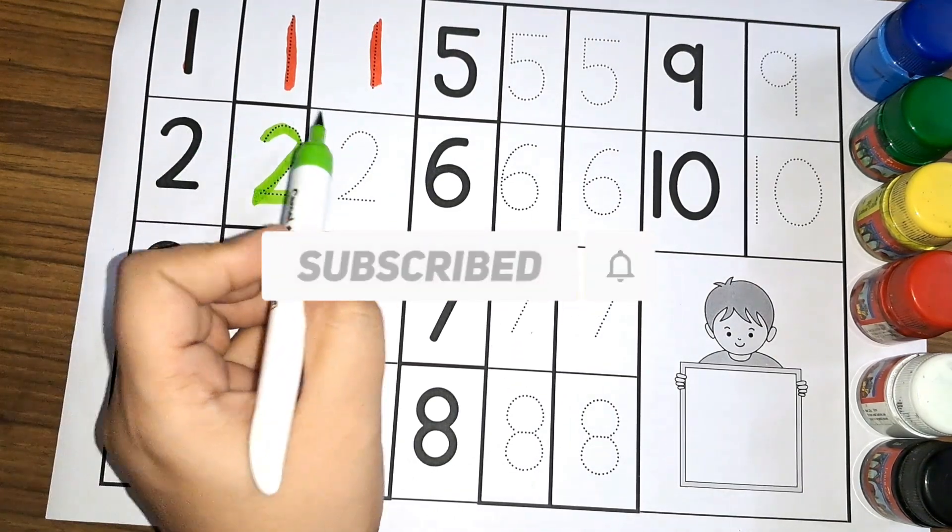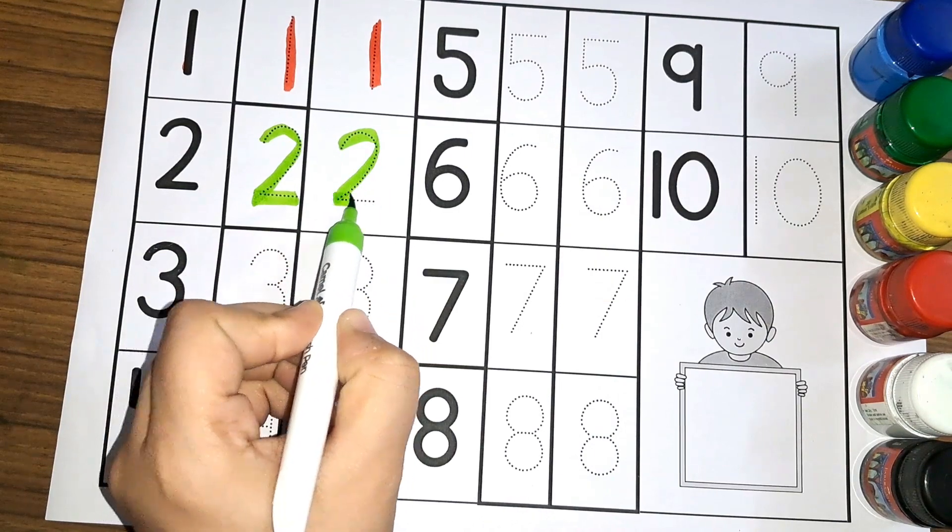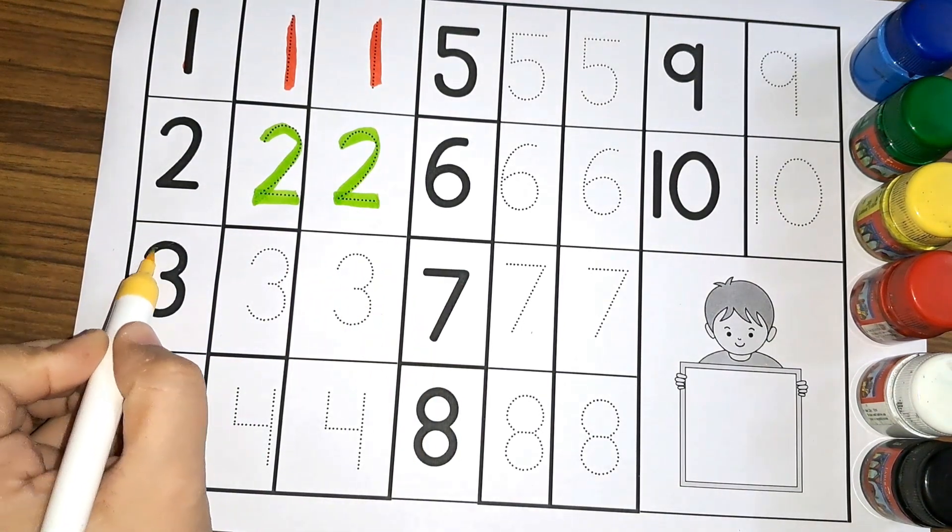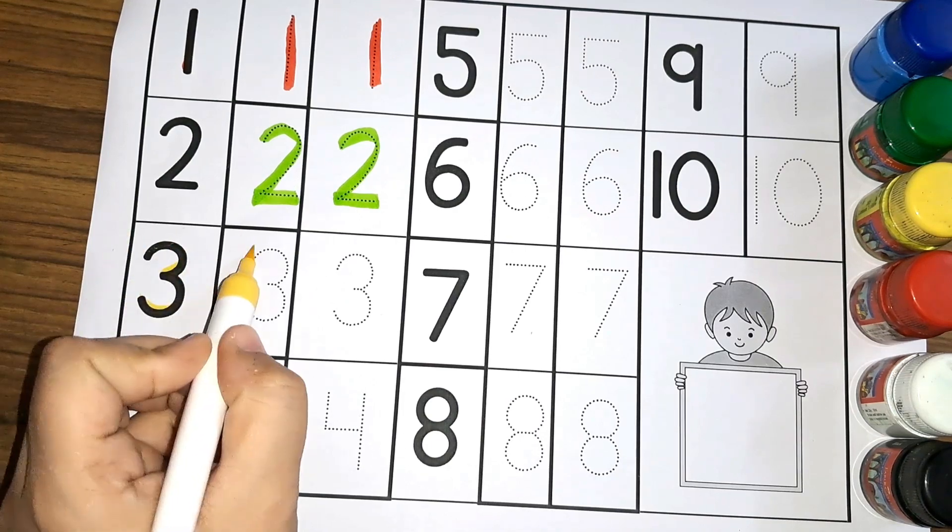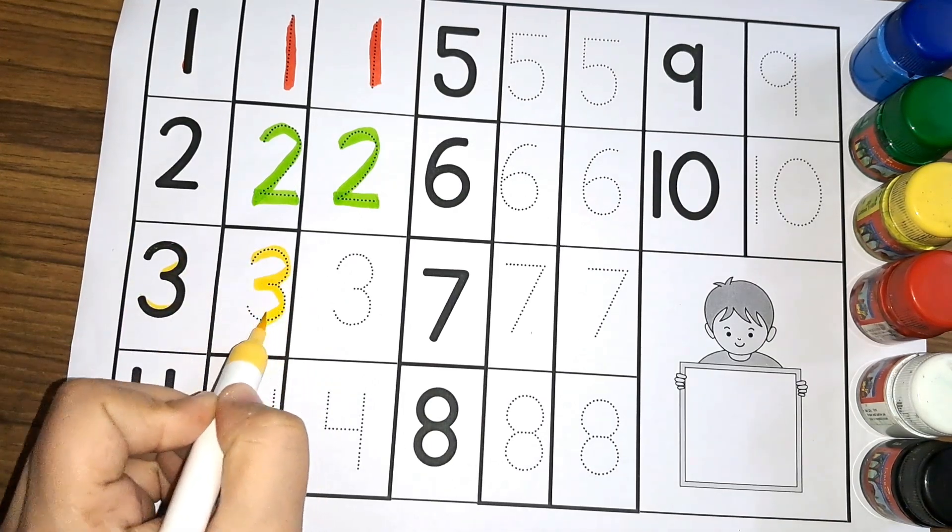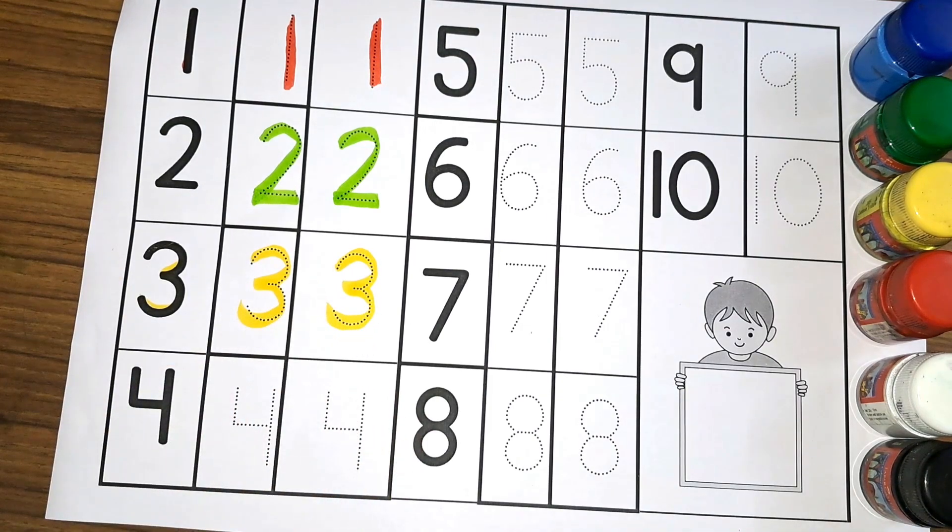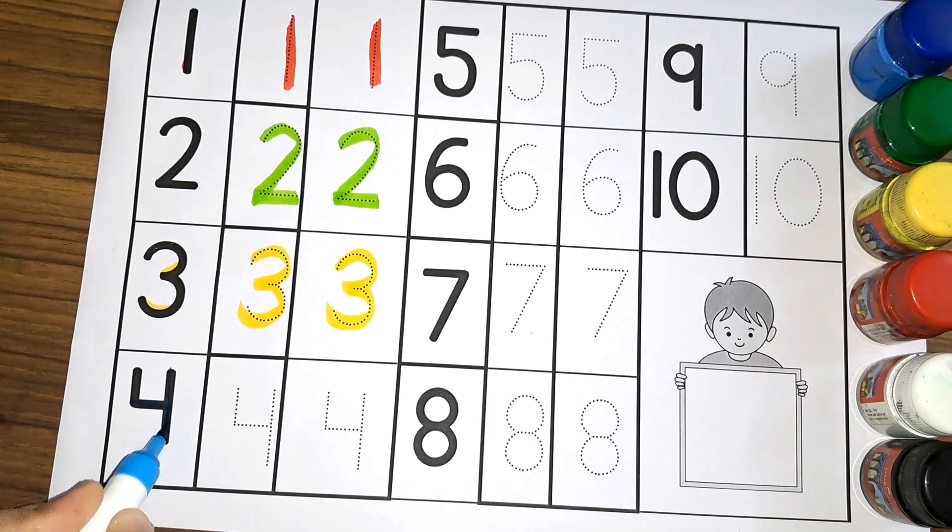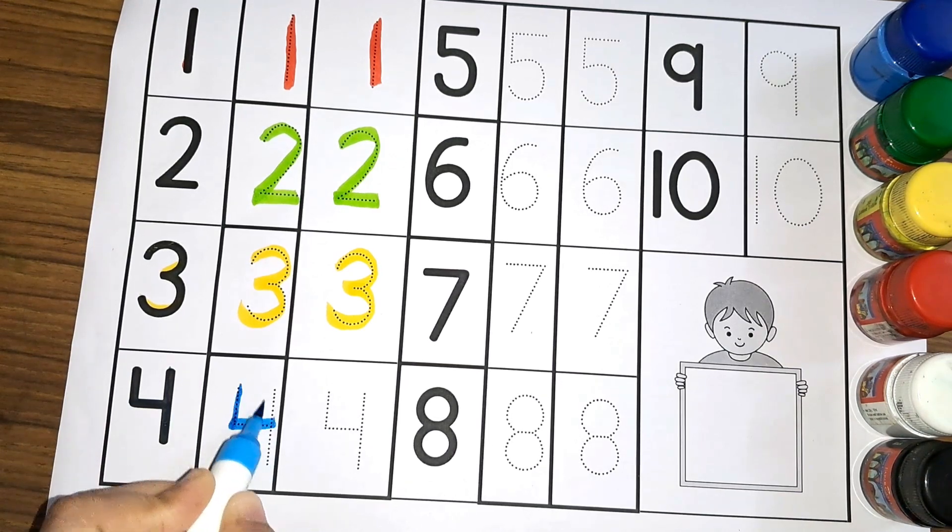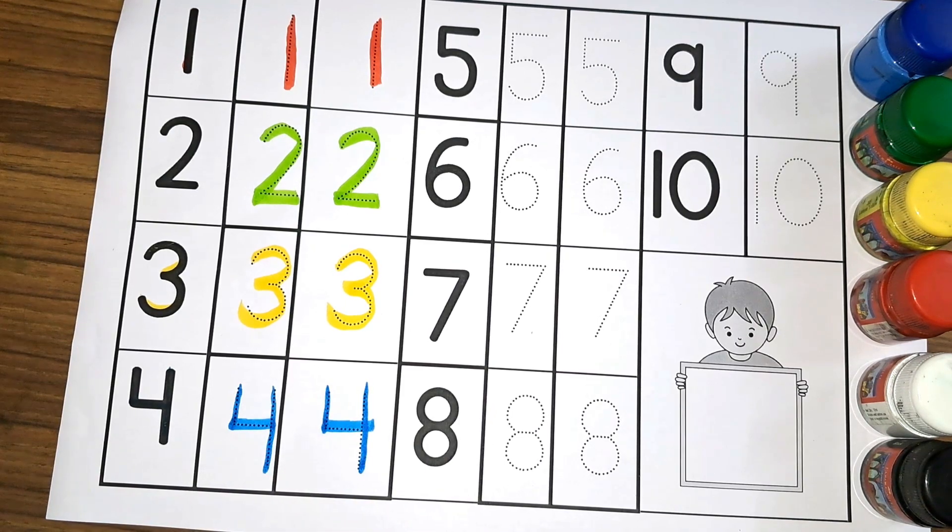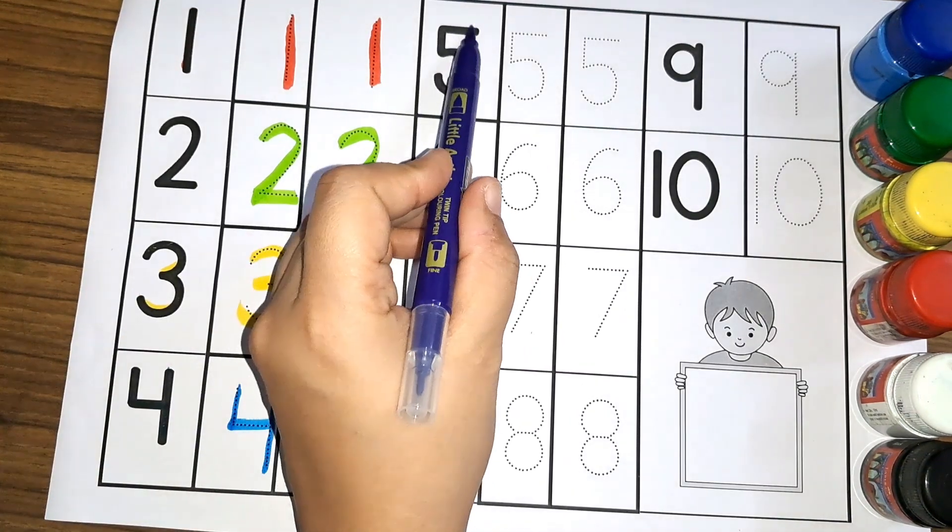Number two. Then we have number three, number three, number three. There is four, number four, number four, five.